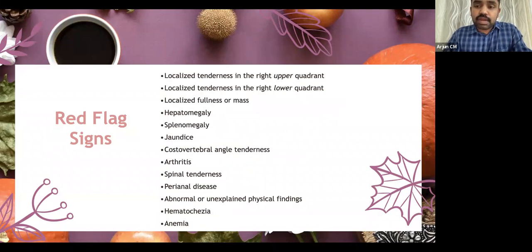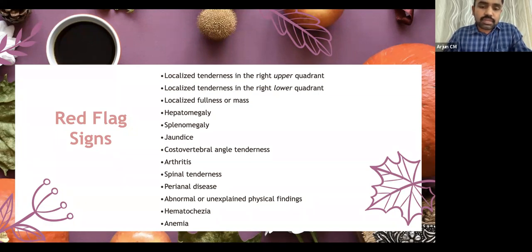Red flag signs include: tenderness in the right upper or lower quadrant; localized fullness or mass; hepatosplenomegaly; jaundice; costovertebral angle tenderness; arthritis; spinal tenderness; perianal disease; unexplained physical findings; hematochezia; and anemia. These may point towards an organic etiology. The most commonly found red flag symptoms and signs are unexplained fever, persistent vomiting, and blood in stools — such findings warrant further investigation for organic causes.